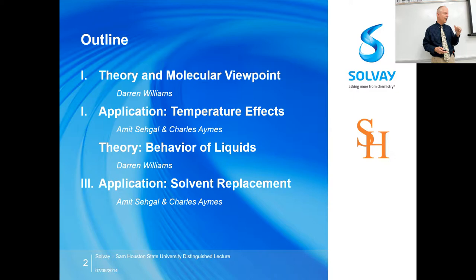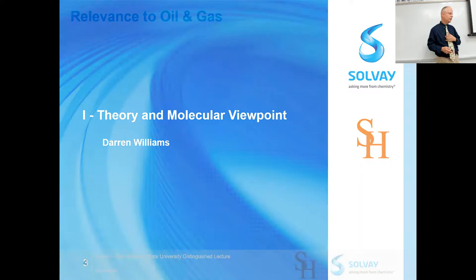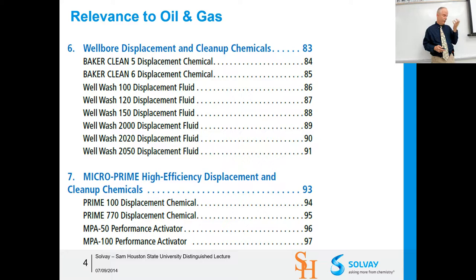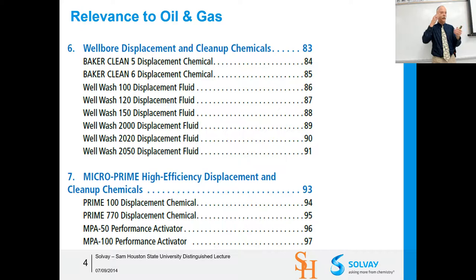The outline: I talked about the theory from a molecular viewpoint, then Solvay had an application, then I talked about the behavior of liquids, then another application. As for relevance — Baker Hughes is an oil and gas company. In their flow assurance area, they get crude from down in the hot reservoir to the surface. Down in the reservoir you have huge pressure and temperature; at the surface you have one atmosphere and room temperature.